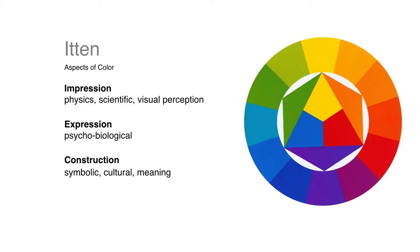Expression are the psychobiological aspects of color, the effects of color on the human being, both physically and psychologically. And then construction are the meanings of color, the symbolism, cultural meanings, so that when we use color in communication, then that's where construction comes in.